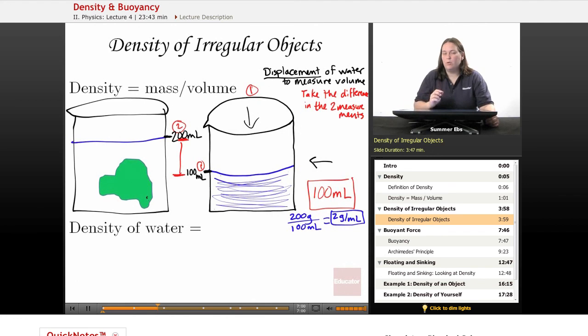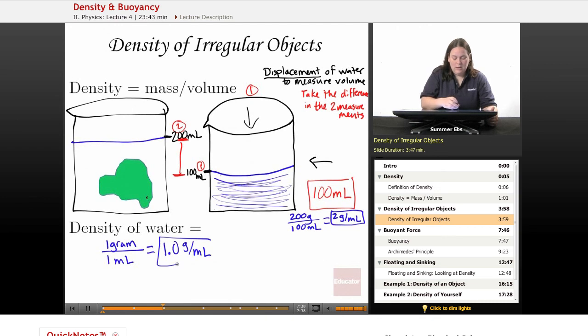Now the density of water. This is important because later this will tell us if objects sink or float based on how their density relates to the density of water. If you took one milliliter of water, it would have a mass of one gram. One gram of water has a volume of one milliliter. So the density of water is one gram per milliliter. That's a nice, easy one to remember. Keep that in mind for the next slides.